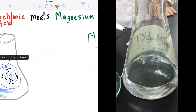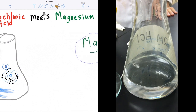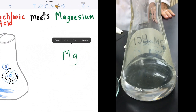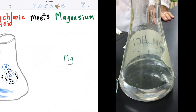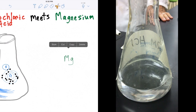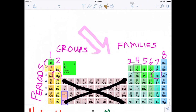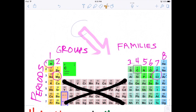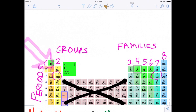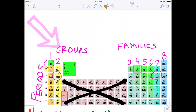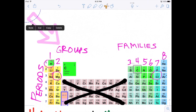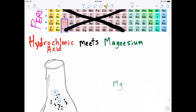Now let's talk about our magnesium atom. We look at the periodic table again and we see that magnesium lives over here at this address. Third period — that means three shells, two electrons in its outer shell. So let's go build a magnesium atom.